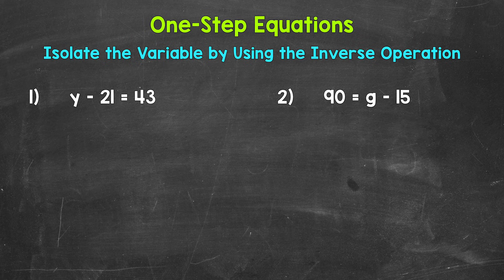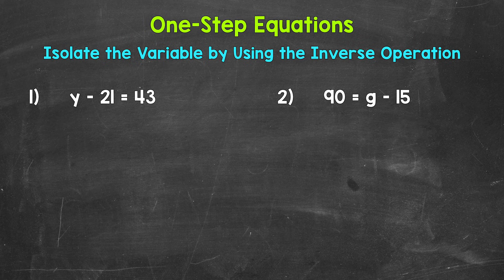When we solve one-step equations, we want to isolate the variable, which means get it by itself. Basically, we want to undo whatever is being done to the variable. That way, the variable is by itself on one side of the equation. We do this by using the inverse or opposite operation. Keep in mind, it is very important that whatever is done to one side of the equation, it must be done to the other. That keeps everything balanced and equal.